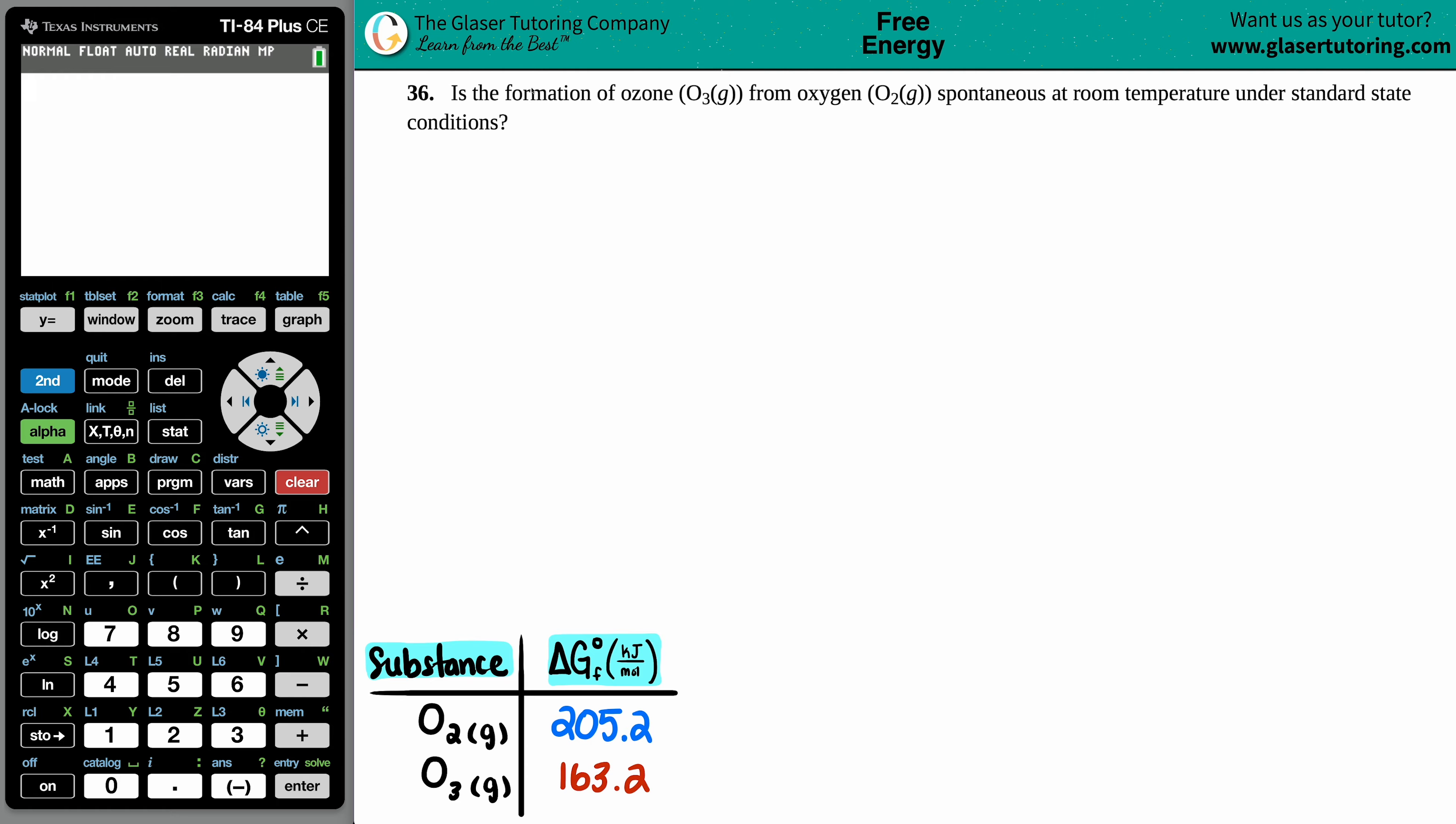Number 36 is the formation of ozone, which is O3 gas, from oxygen, which is O2 gas, spontaneous at room temperature under standard state conditions.